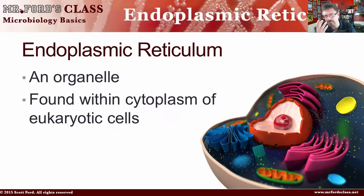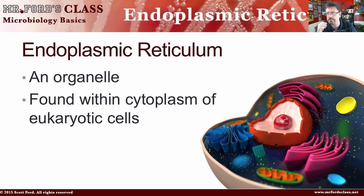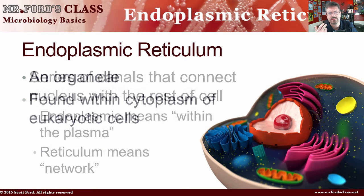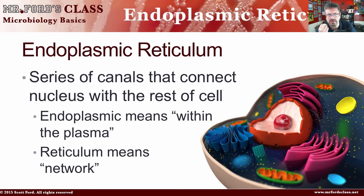So let's talk about the endoplasmic reticulum. First of all, the endoplasmic reticulum is considered an organelle. It is found within the cytoplasm of eukaryotic cells. If you don't know what eukaryotic cells are, there's a video covering the basics of cells — prokaryote versus eukaryote. The endoplasmic reticulum is a series of canals that connect the nucleus with the rest of the cell. Endoplasmic means within the plasma, while reticulum means a network — so it's a network within the plasma.